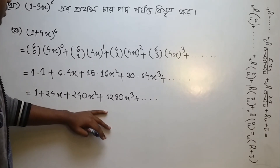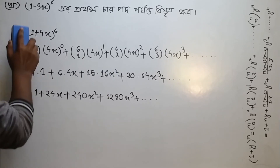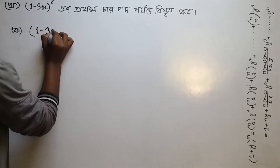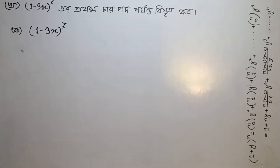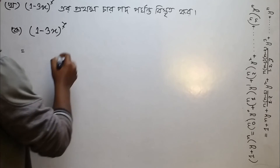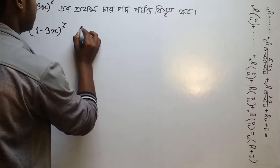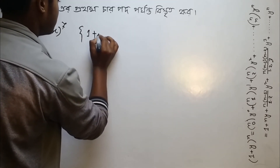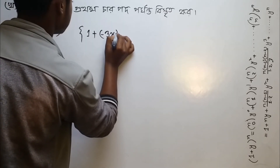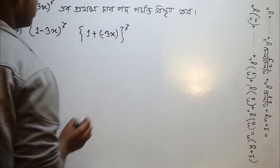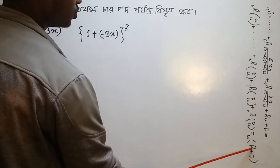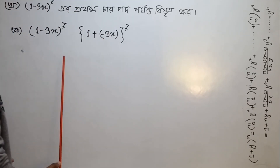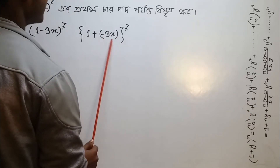We will take this calculation further. The calculation gives us 1 minus 3x to the power 7. We need to calculate with 1 plus y, here minus 1 — so y is minus 3x. Total Y is minus 3x, so Y equals minus 3x to the power 7.